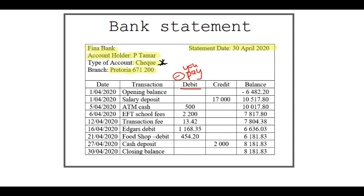The credit amount is a positive amount in most cases — you get or receive this money. And the balance tells us how much you have in your account at any time during the statement period.